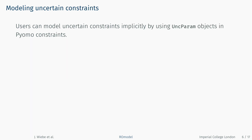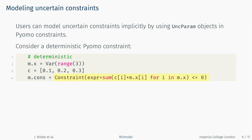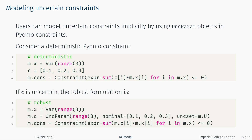By using uncertain parameters and uncertainty sets within PyOMO constraints, users can define uncertain constraints. Consider a deterministic constraint on a PyOMO model where parameters c are known and decision variables x are to be determined. Transitioning to a robust constraint simply requires adding an uncertain parameter object and a corresponding uncertainty set object to the model, and then using the uncertain parameter instead of the fixed value within the PyOMO constraint.